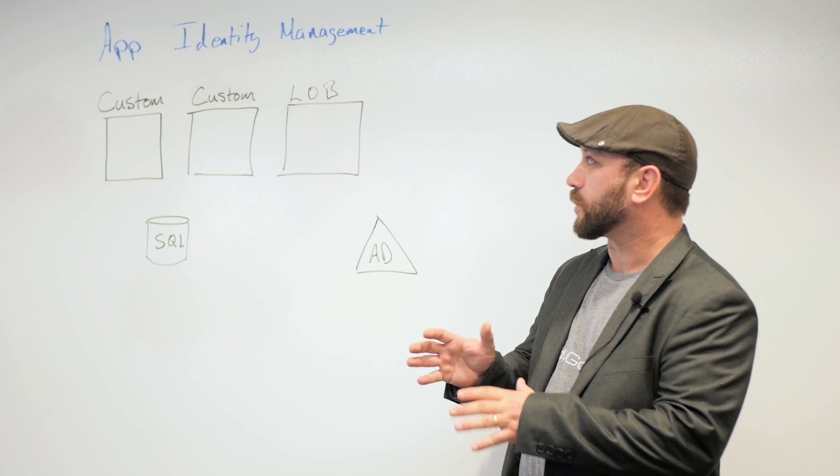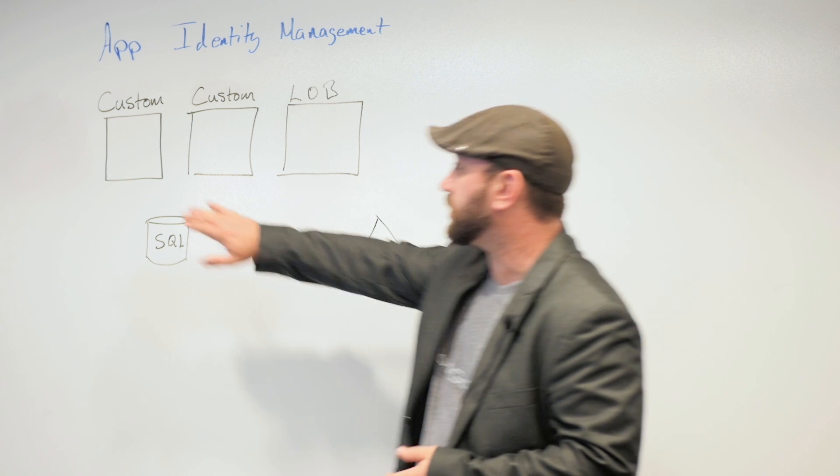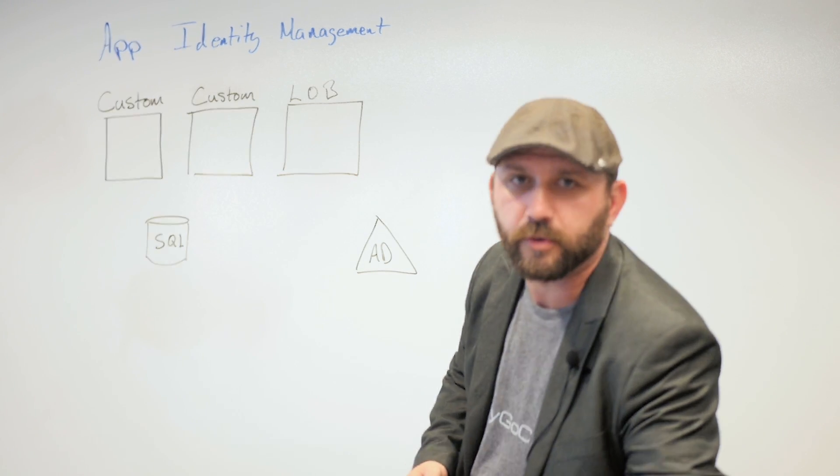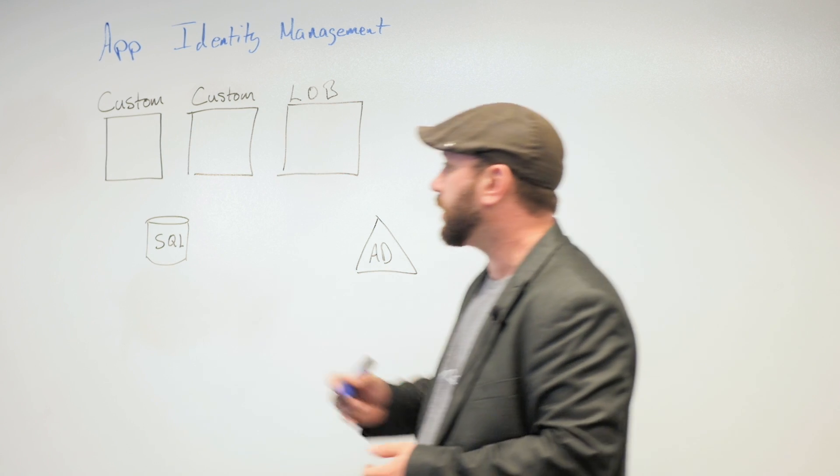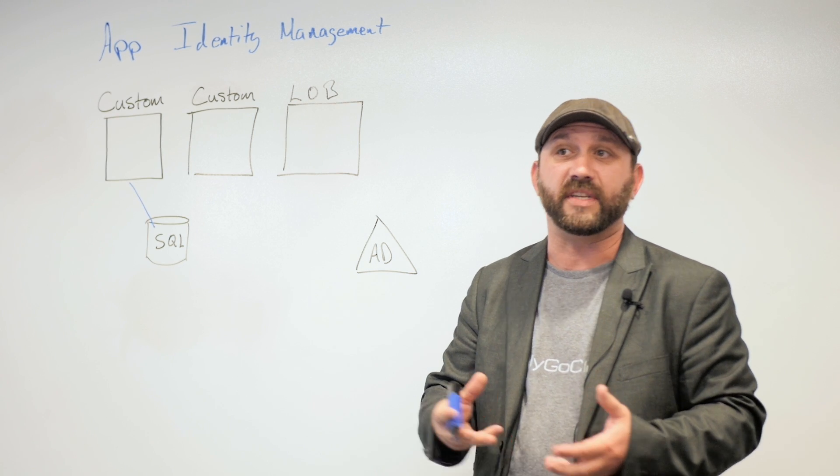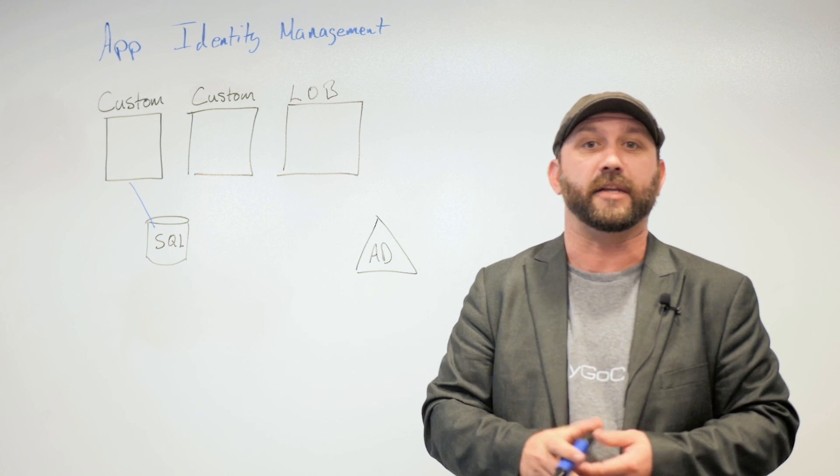So we're going to start with a story of three applications. Our first application is a custom application that you've built at home, and it's for your end users or partners or other external parties. So you've created identities and stored them in a SQL server. This is the default with what you get with MVC, and you want to spin up a basic identity provider.